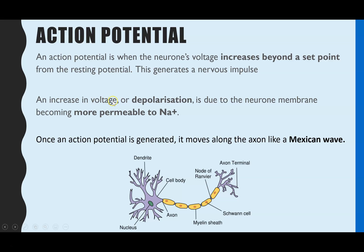So an increased voltage above the resting potential is called depolarization. And this is when the voltage starts to become more positive. And that is caused by the axon membrane becoming more permeable to sodium ions.